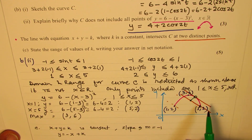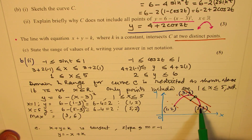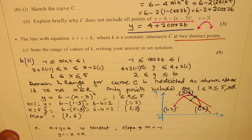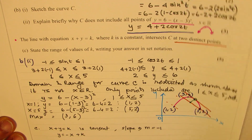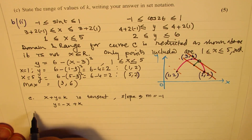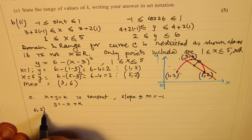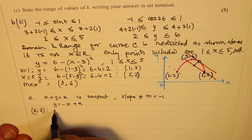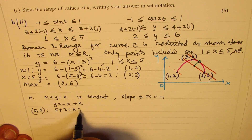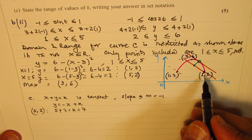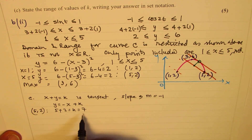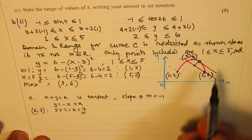We need to find the value of k for both limits. One limit is when the line passes through the point (5, 2). Substituting x equals 5 and y equals 2 into x plus y equals k gives k equals 7. So one of the limits is k equals 7.